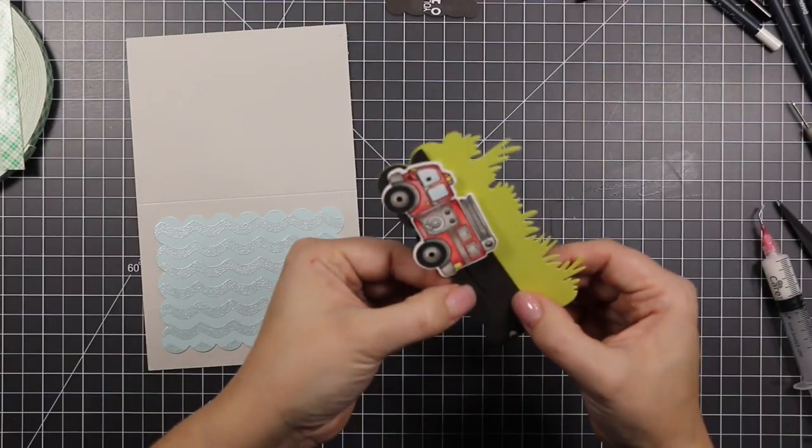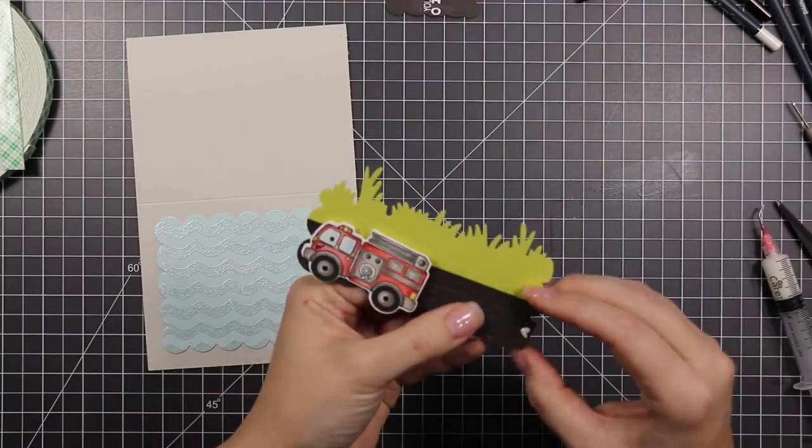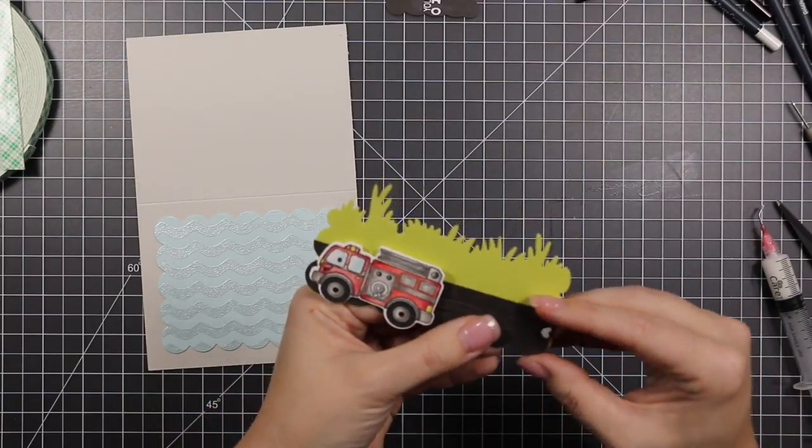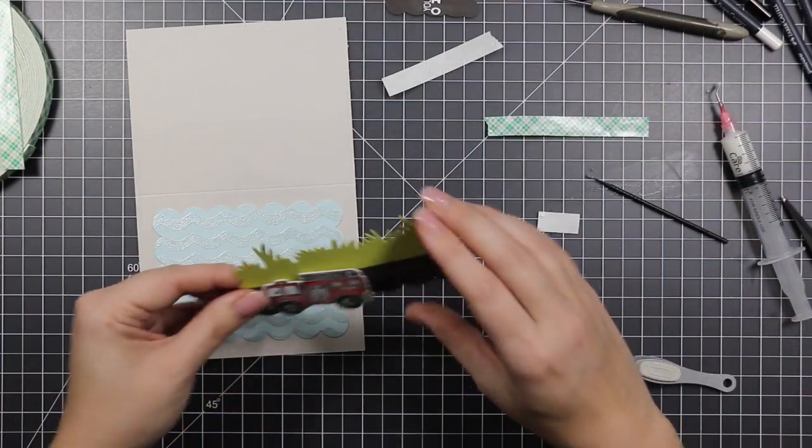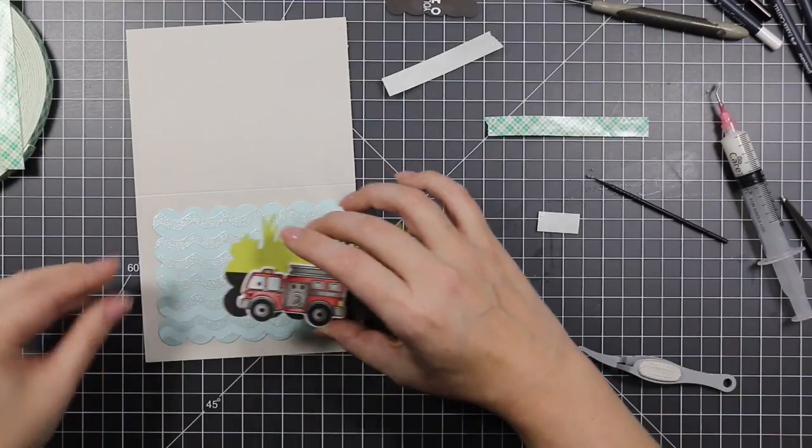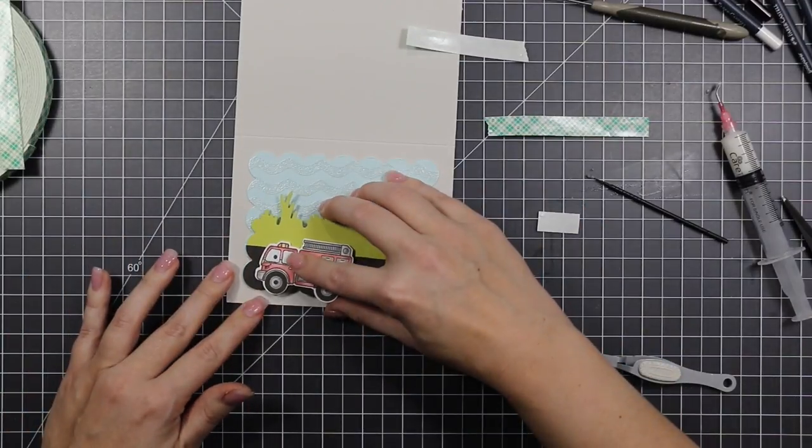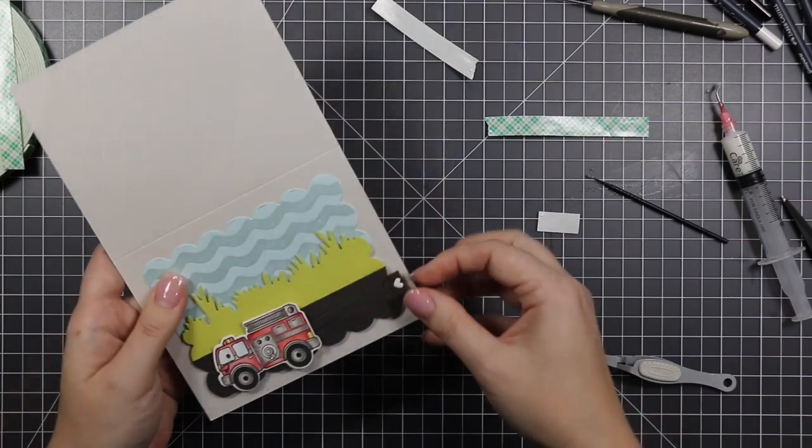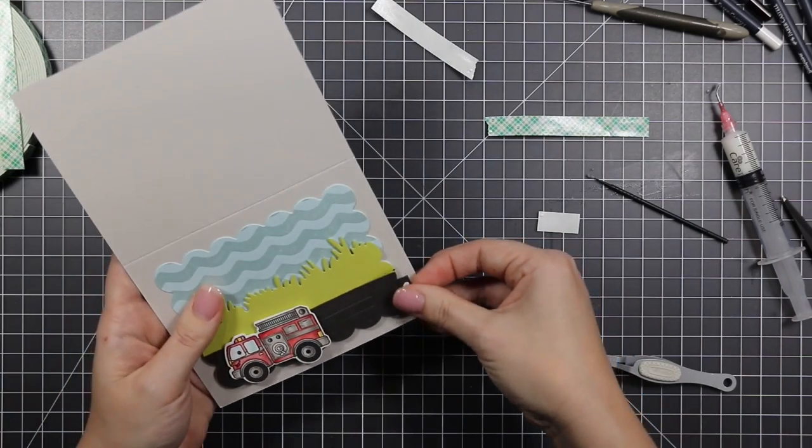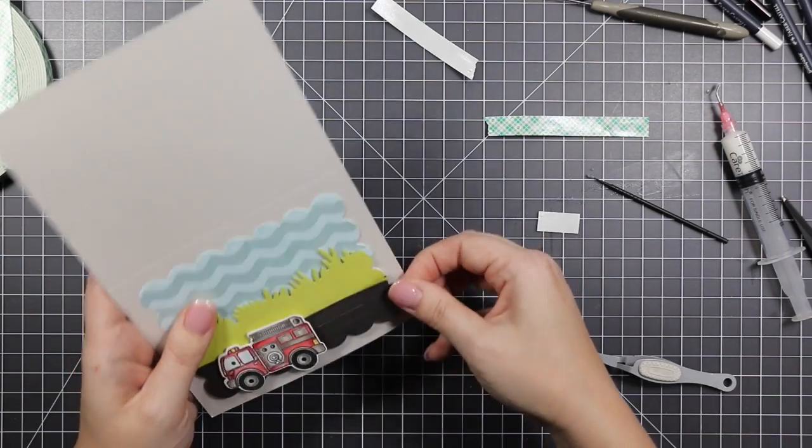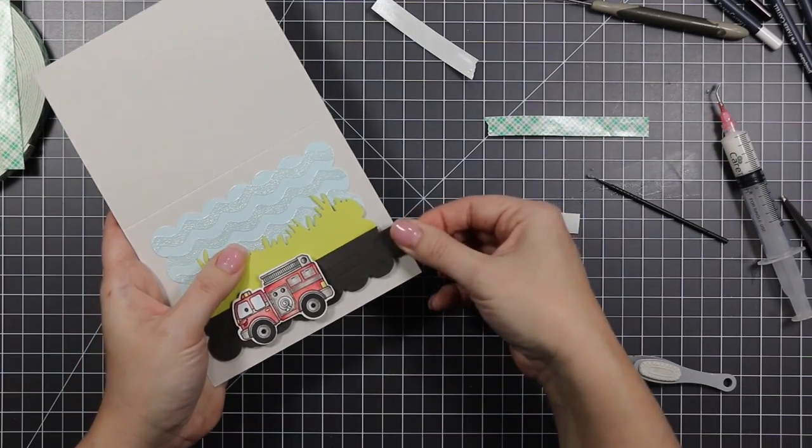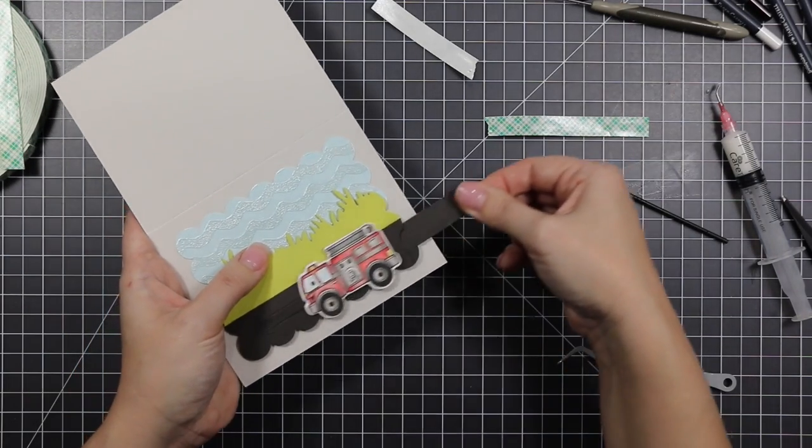Everything's still moving, so I'm going to use some foam tape to pop up my grassy portion on my background and always test to make sure things are still working somewhat like they're supposed to.